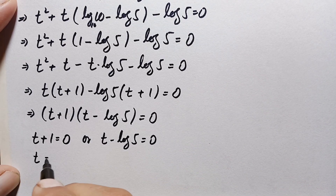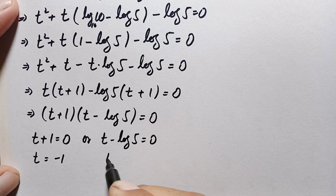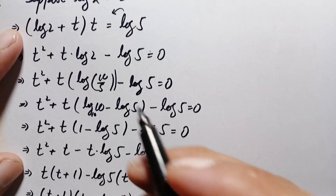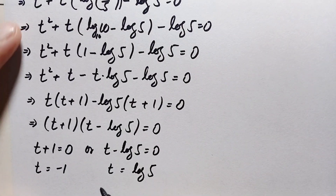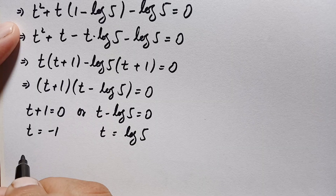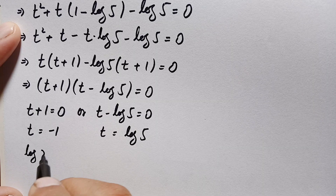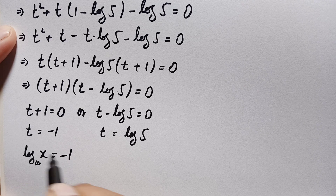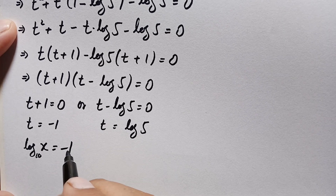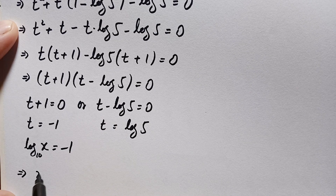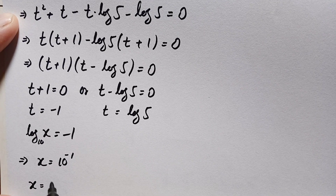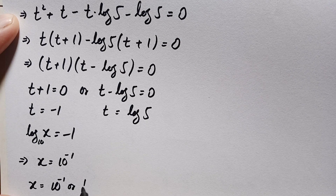So t = −1 or t = log 5. Going back to our substitution t = log x, for the first case: log x = −1. Since the base is 10, writing in exponential form gives x = 10 raised to power −1, which equals 1/10. This is our first value of x.